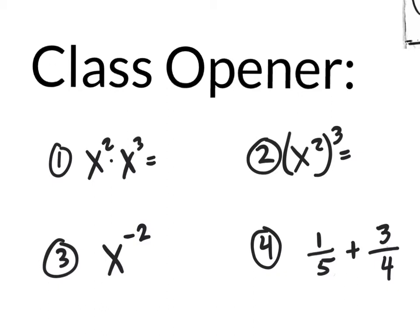The class opener number 1 has x to the 2nd times x to the 3rd. That's rule 1 of exponents. When you're multiplying with the same base, do you multiply these exponents? No — you add them, so the answer is x to the 5th. Just keep that in mind: when you're multiplying two terms with the same base, you're going to be adding exponents.